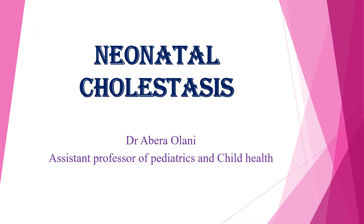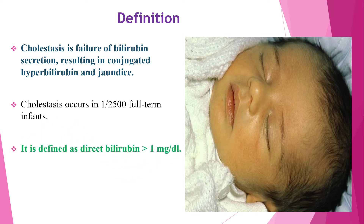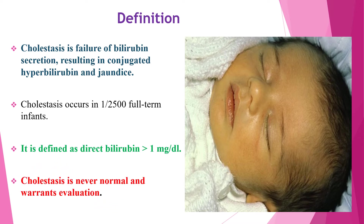Hello, today's lesson is about neonatal cholestasis. Cholestasis is failure of bilirubin secretion, resulting in conjugated hyperbilirubinemia and jaundice. Cholestasis occurs in 1 in 2,500 full-term infants. It is defined as direct bilirubin more than 1 mg per dL. Cholestasis is never normal and it needs evaluation and management.